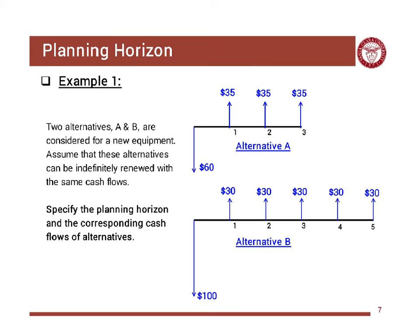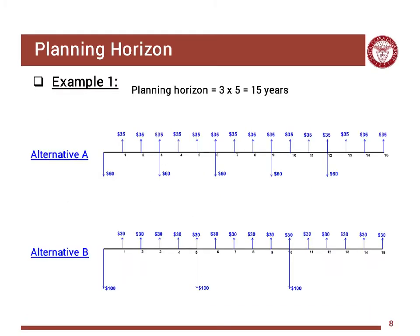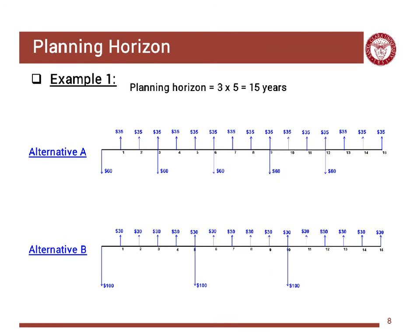When you have different alternatives with different lives, for example alternative A of three years and alternative B of five years, the least common multiple is 15 years. So your planning horizon would be 15 years. Over these 15 years, you repeat alternative A five times — buying a second, third, fourth, and fifth unit — while for alternative B you buy it, replace it with a second, then a third, ending at the same planning horizon.